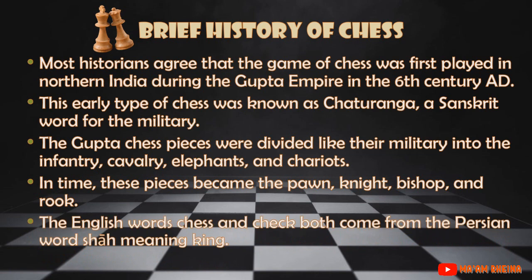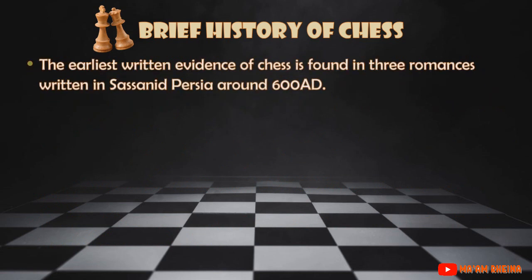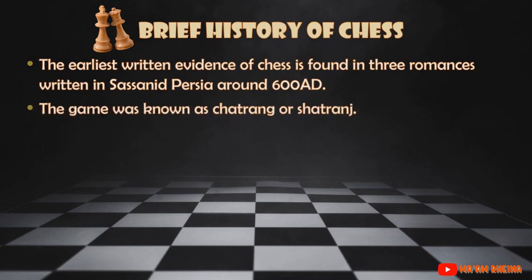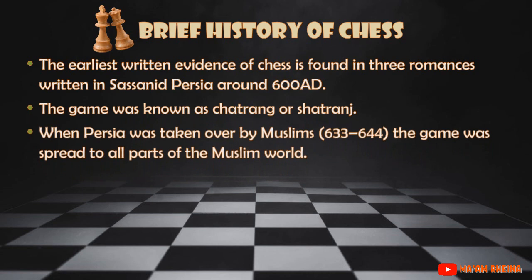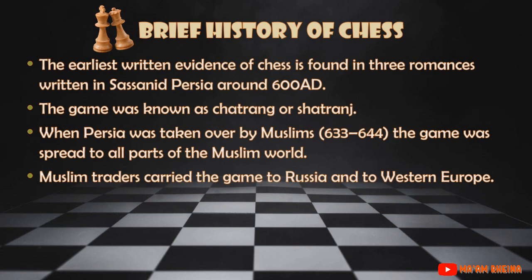The English words 'chess' and 'check' both come from the Persian word 'shah,' meaning king. The earliest written evidence of chess is found in three romances written in Sassanid Persia around 600 AD. When Persia was taken over by Muslims, 633 to 644, the game was spread to all parts of the Muslim world. Muslim traders carried the game to Russia and to Western Europe, and by the year 1000 it had spread all over Europe.